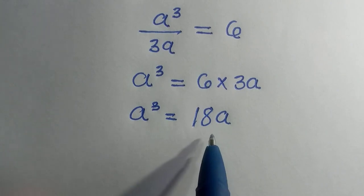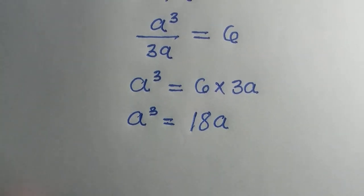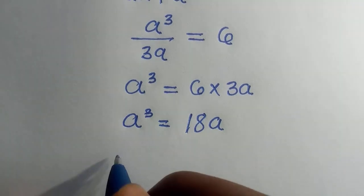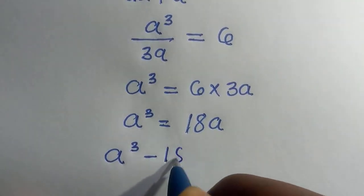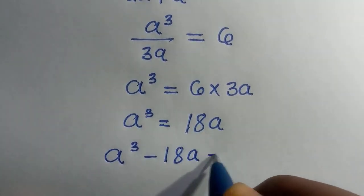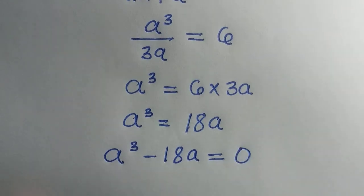So having this, we take 18a to the left-hand side, and we have a raised to the power of 3 minus 18a equals 0.